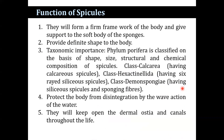The functions of spicules include forming the framework of the body and giving support to the soft body of the sponges, and providing a definite shape to the body. Regarding their importance, Phylum Porifera is classified on the basis of the shape, size, structure, and chemical composition of spicules: class Calcarea has calcareous spicules, class Hexactinellida has six-rayed siliceous spicules, and class Demospongiae has siliceous spicules and spongin fibres. Spicules also protect the body from disintegration by wave action and keep the dermal ostia and canals open throughout the life.